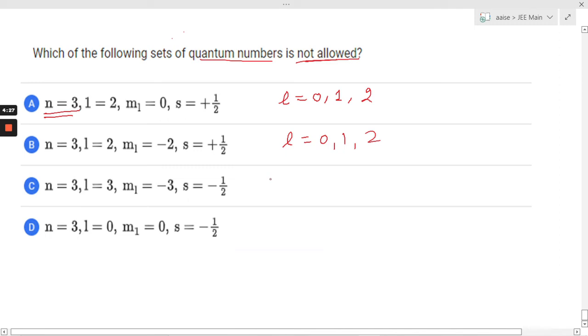Again here, n equals 3, so l is going to be 0, 1, or 2. But in this option, l is given as 3, and that is not possible. So option C is correct - this is not allowed.